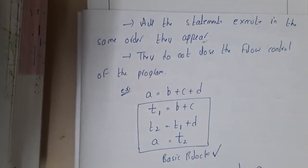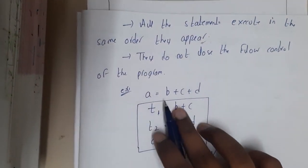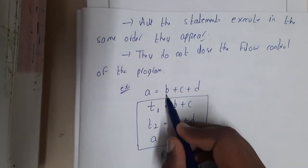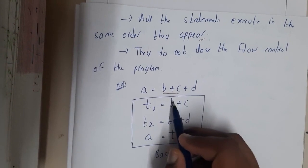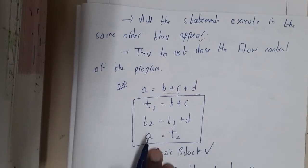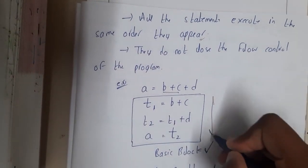If you observe here, a equals b plus c into d. So t1 equals b plus c, and this result plus d, that is t1 plus d, is t2, and t2 is stored in a. This is done from top down - first, second, third. So this is a basic block.